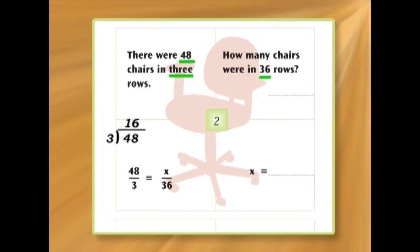So, now we know how many chairs are in one row. So, we had 36 rows, so we have to multiply 16 by 36. And that's tough to do in your head. So, let's do it together. 36 multiplied by 16.